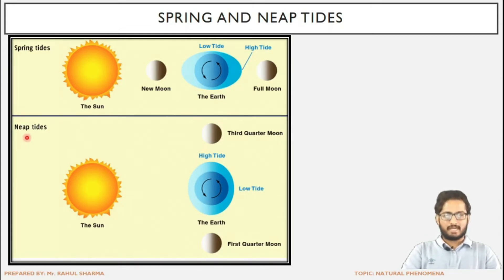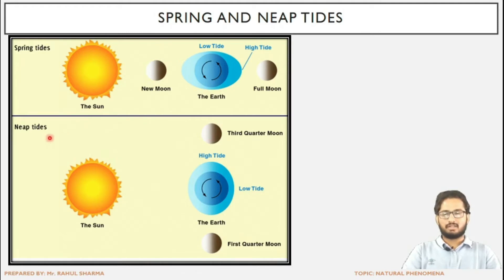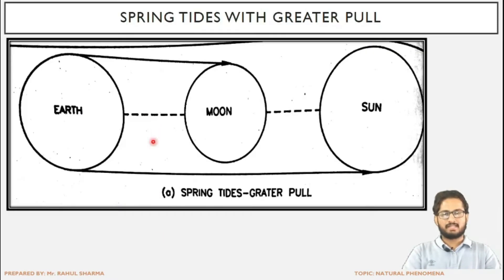Neap tides are the tides of the lowest height, occurring when the sun, Earth and moon are perpendicular. This happens in the first quarter and the third quarter of the moon's movement around the Earth. In the first quarter the moon is below and in the third quarter it will be above the line connecting sun and Earth. As they become perpendicular the gravitational forces become subtractive and tides with the lowest height are generated.